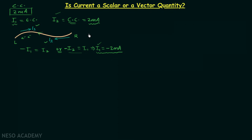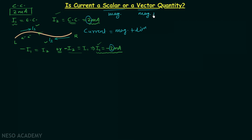Notice that current has both a magnitude and a direction — the two currents both have magnitude equal to 2, and each has a direction. Scalar quantities are those which have magnitude only, while vector quantities have magnitude as well as direction. So looking at current, it has magnitude as well as direction, which would suggest it is a vector quantity.